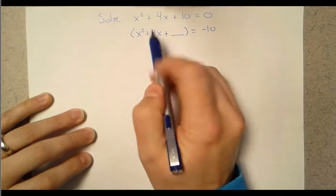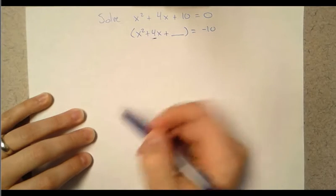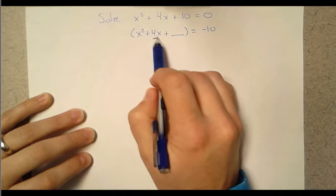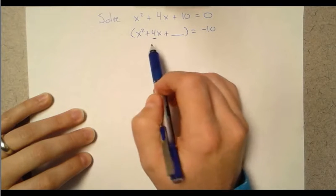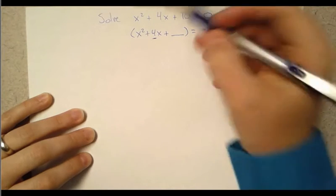So to complete the square remember this middle term is the key. So if I do half of 4 and then square it. So half of 4 is 2 squared. Of course it's still 4.